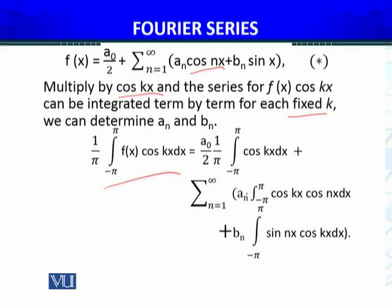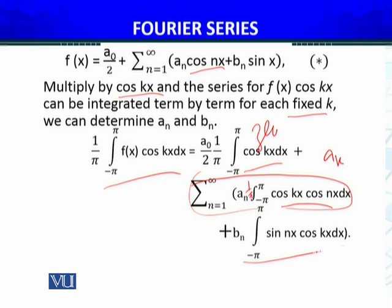Now we do that same work. Integrate. The a_naught term will be zero. Whenever k equals n, that integral will be one, which gives you a_k. In this entire series, only a_k remains because all these integrals, which I just recalled, with 1 over π will be one. Similarly, this integral will be zero.